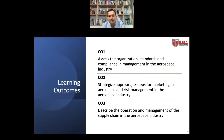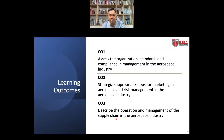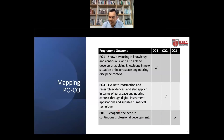You will also be able to strategize appropriate steps for marketing, as we have a specific topic on aerospace marketing, and for risk management in the aerospace industry. For course outcome number 3, you should be able to describe the operation and management of the supply chain in the aerospace industry — covering the five main subsectors: MRO, manufacturing, engineering design, system integration, and education and training.